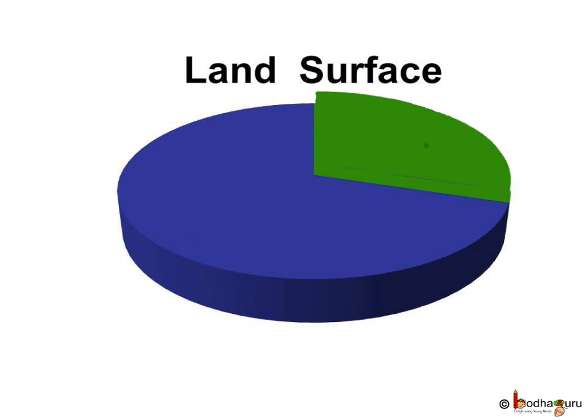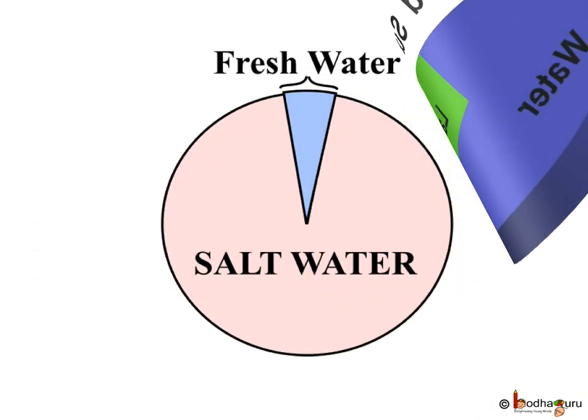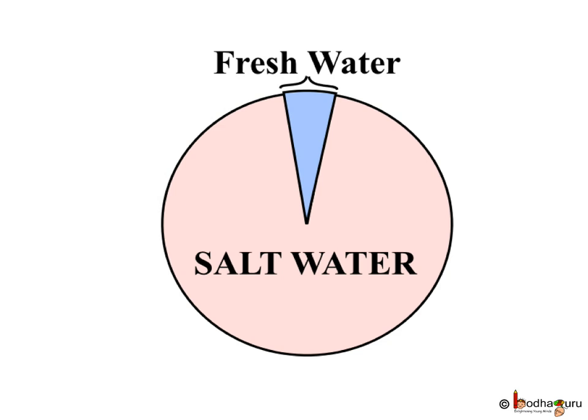Then, why do we say water is scarce and we should not waste it? Here is the reason. In this huge amount of water that is available, only 2.5% of the water is fresh and useful. That is painfully less, isn't it? What about the rest of it? The rest is saline water — it contains dissolved salts. Saline water is not potable; it cannot be used for drinking or cooking.